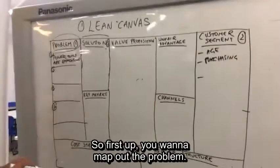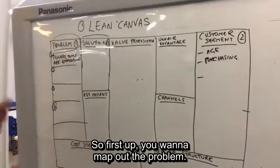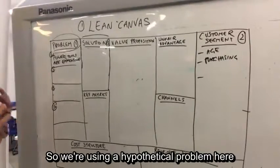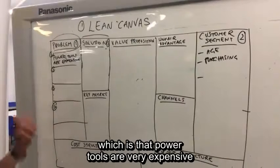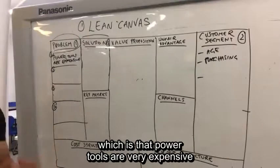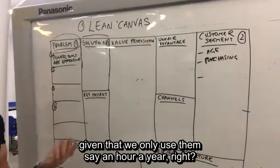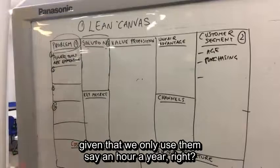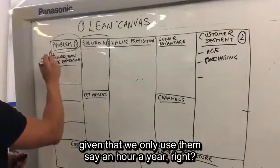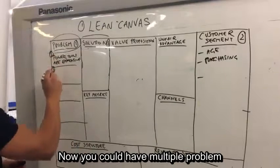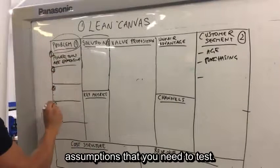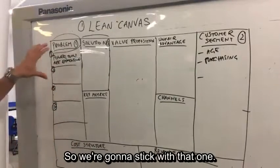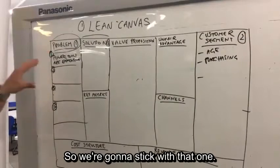So first up you want to map out the problem. We're using a hypothetical problem here, which is that power tools are very expensive given that we only use them say an hour a year. Now you could have multiple problem assumptions that you need to test.